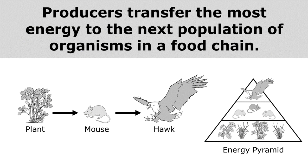Producers transfer the most energy to the next population of organisms in a food chain. You can see the energy pyramid here — the most energy goes from the producers, the plants, to the next organism. Then each level gets less and less as energy is lost to the environment as heat and trapped in the bodies of dead and decaying organisms.